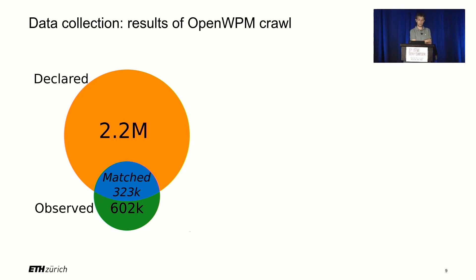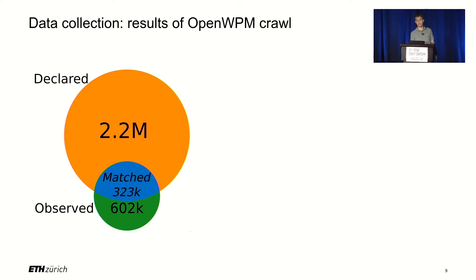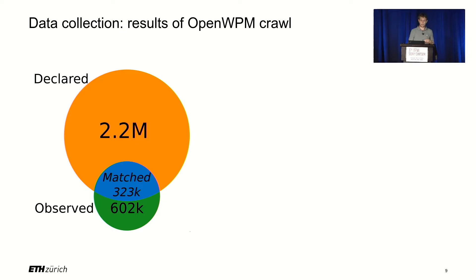The second crawl found 2.2 million cookie declarations in total and approximately 600,000 observed cookies. To build the training dataset, we matched declarations (which had purposes) with real cookies using the cookie name and domain, yielding roughly 323,000 training samples. Notably, many real cookies found on websites were never declared in the consent notice — a potential GDPR violation we analyze later.